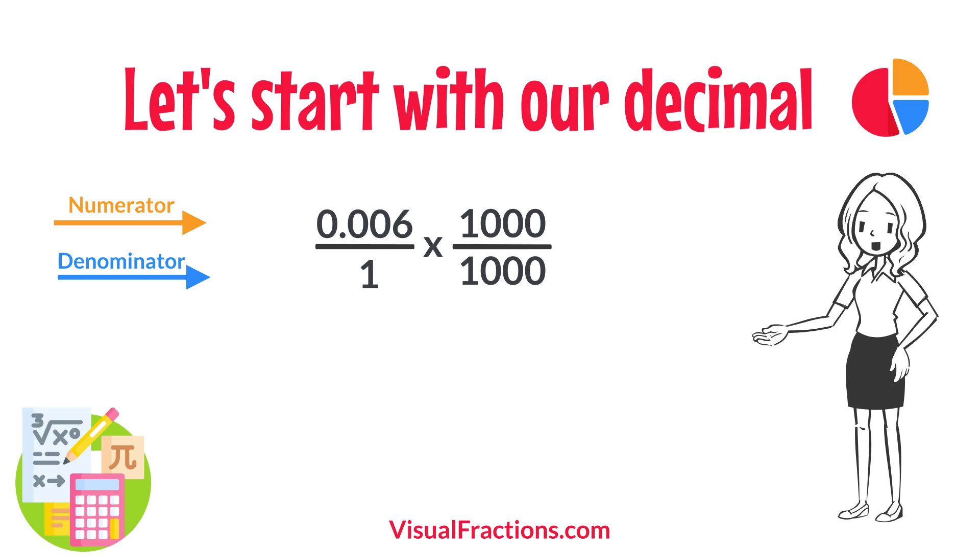So, 0.006 times 1,000 gives us 6, and 1 times 1,000 gives us 1,000. This translates 0.006 to the fraction 6 over 1,000.